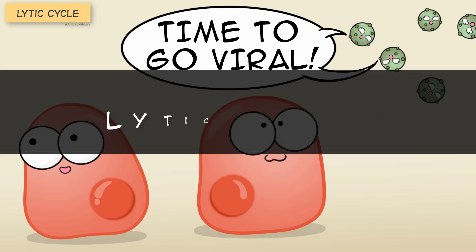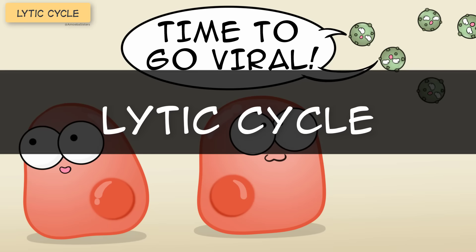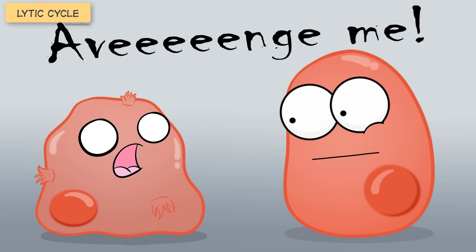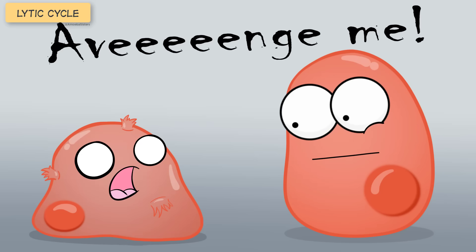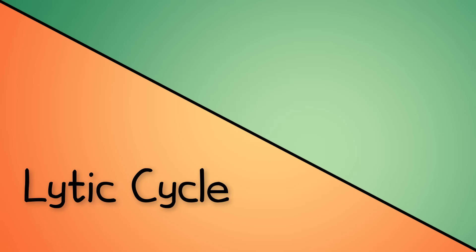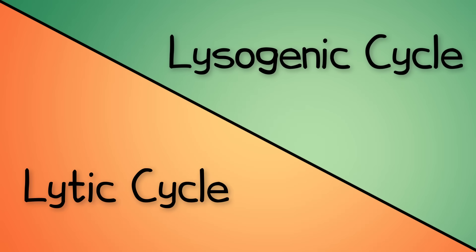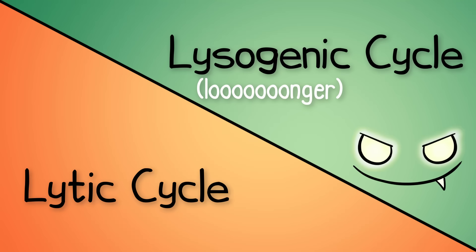This is known as the lytic cycle. The lysing of the cell membrane is a very bad thing for the cell — the cell cannot survive without its cell membrane. The other cycle is called the lysogenic cycle. I like to remember that this is the longer word, so I think of it as the longer, sneaky cycle.